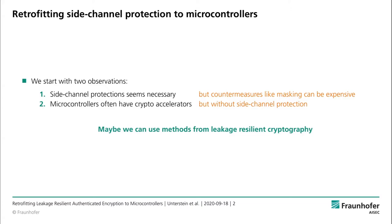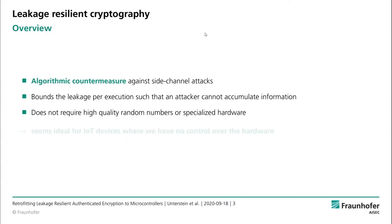In the next few slides, I will give an overview of leakage resilient cryptography and then go into more details about the constructions that we actually use. Leakage resilience is an algorithmic countermeasure against side channel attacks. The basic idea is to bound the leakage per execution such that an attacker cannot accumulate information about the secret. Contrary to masking and other more traditional schemes, it does not require high-quality random numbers or specialized hardware. This makes it ideal for IoT devices where we have no control over the hardware and where high-quality random numbers are often not available.